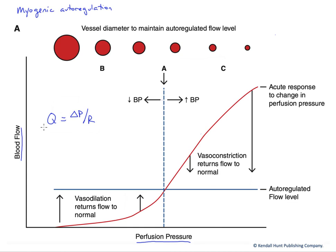We can see that laid out here in Poiseuille's law. In Poiseuille's law, we can see that the driving pressure, delta P, is directly proportional to the flow through that vessel.